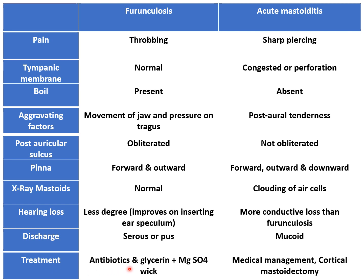Regarding treatment: for furuncylosis, antibiotics targeted against staphylococcus are given, and a glycerine and magnesium sulphate wick or glycerine and ichthammol wick is kept in the external auditory canal. This is a hygroscopic agent that relieves the edema. For acute mastoiditis, initially medical management with antibiotics can be given, and if it does not resolve, cortical mastoidectomy is performed. These are the differences between furuncylosis and mastoiditis. Thank you.